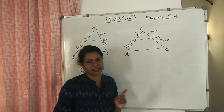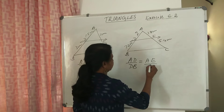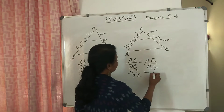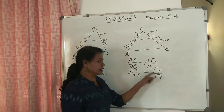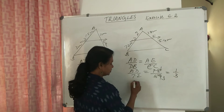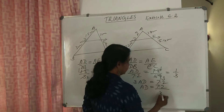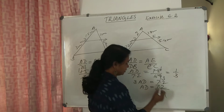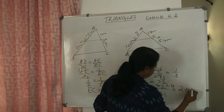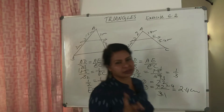Now the next question: DE parallel to BC. By BPT, AD divided by DB is equal to AE divided by EC. AD divided by 7.2 equals 1.8 divided by 5.4. That is equal to 1.8 into 3, which simplifies to 1 by 3. Cross multiplying, 3 AD equals 7.2, so AD equals 7.2 divided by 3. This question is only for one mark.